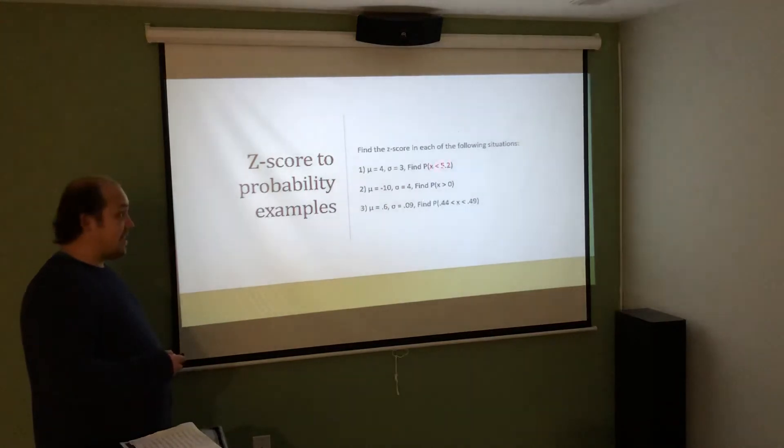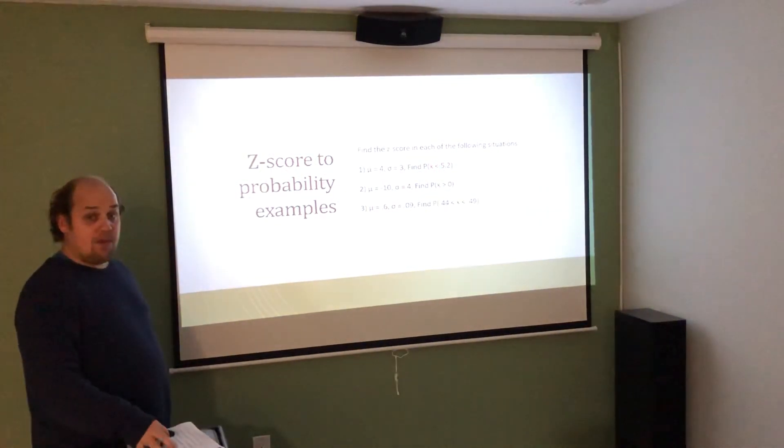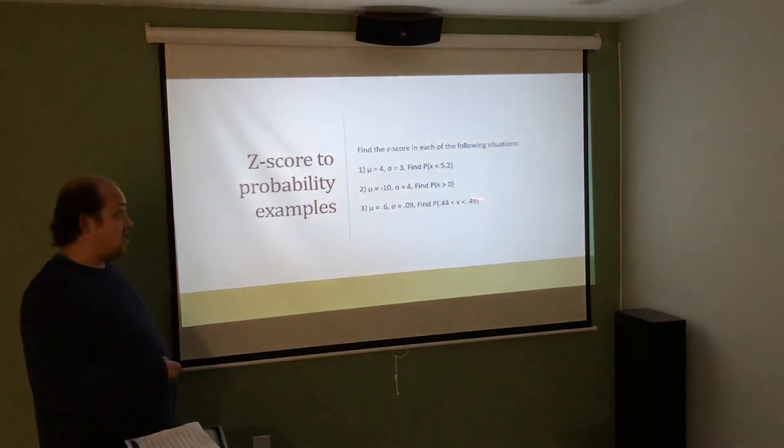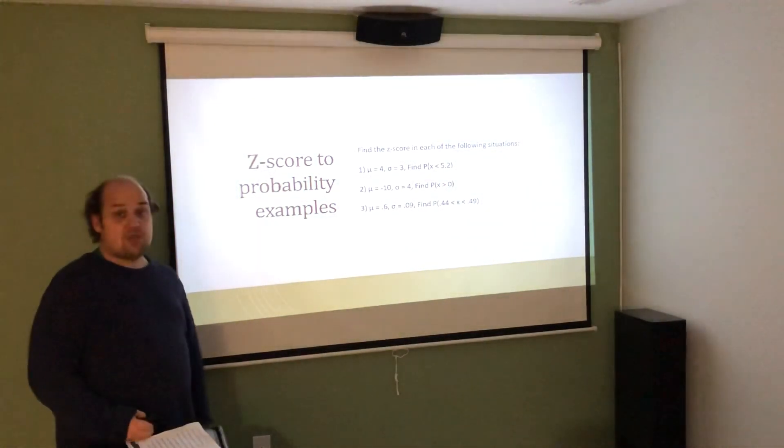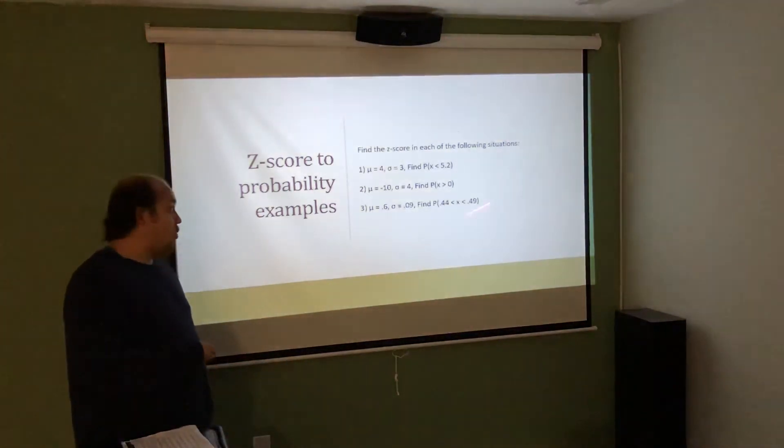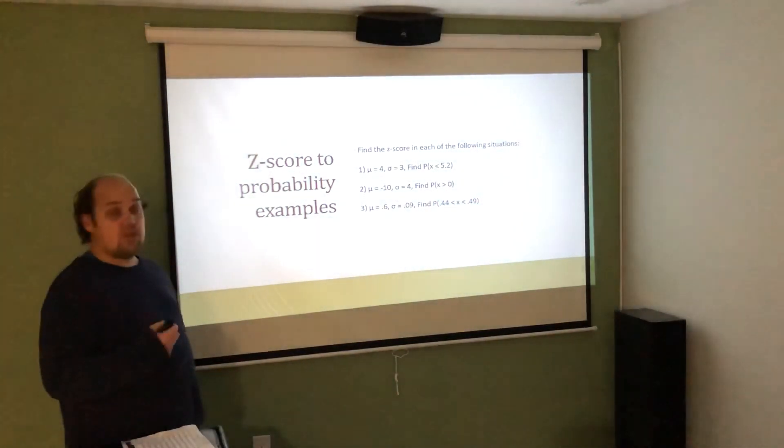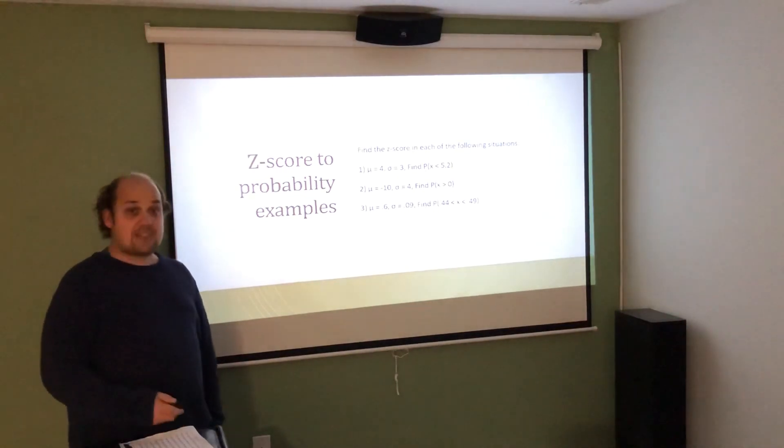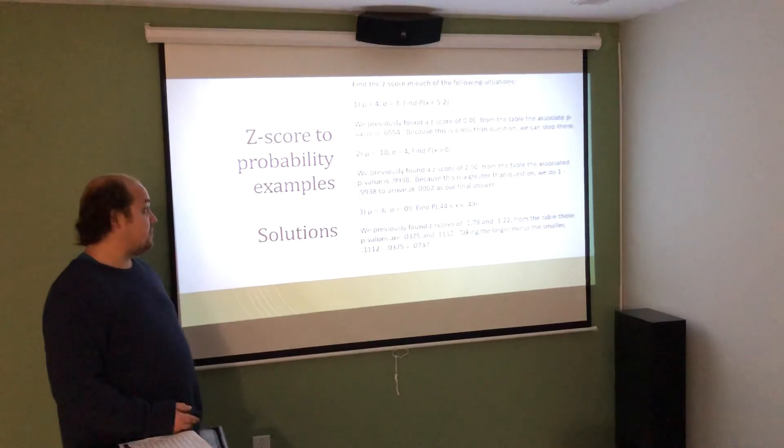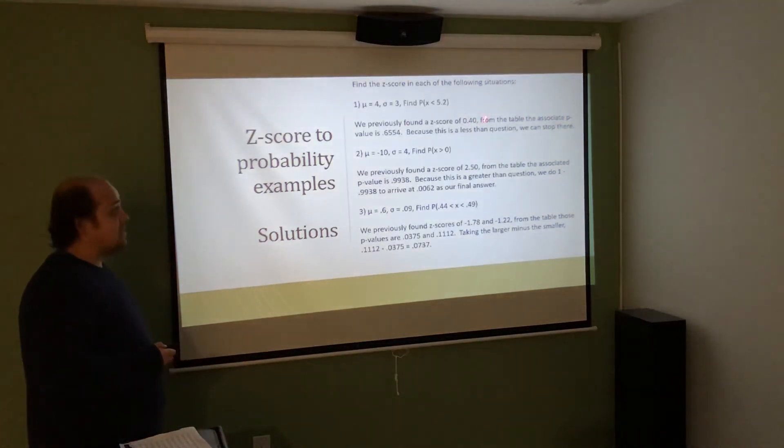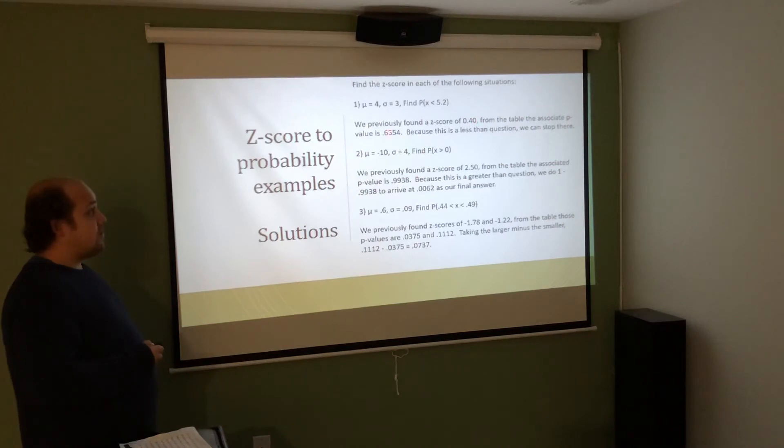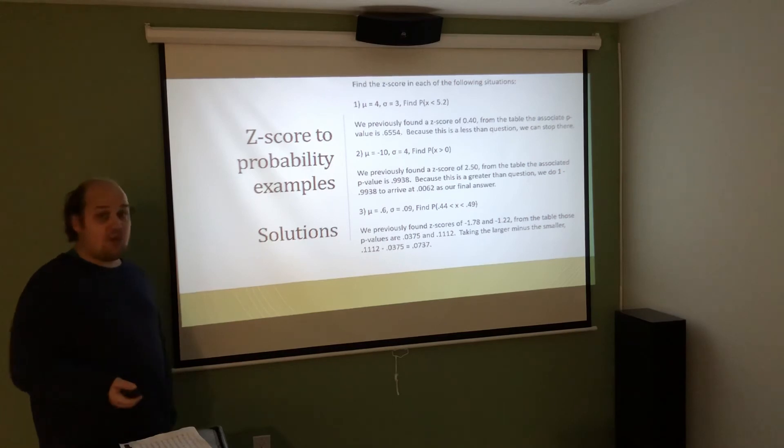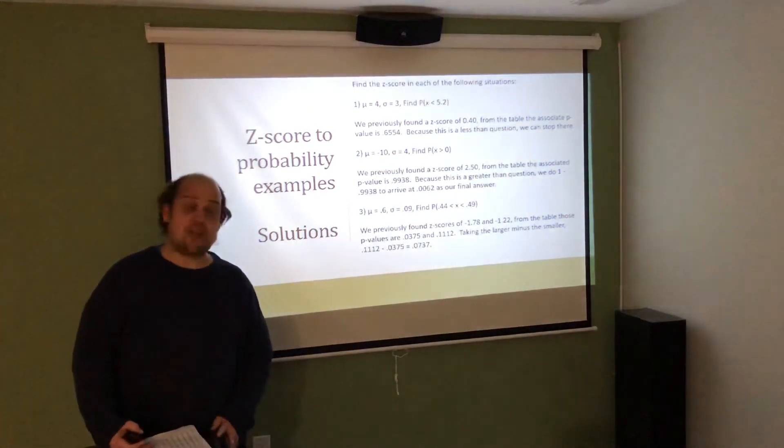So, for this less than question, I can use the exact table probability I find from the Z score I calculate. For this more than situation, I'm going to have to do 1 minus the probability I find. When it's a between question like this, I'm going to have to do the larger P value minus the smaller P value. So, for each of these three, we found the Z scores in the previous slide. We now just need to look up and find the associated probabilities. So, here we previously found the Z score of 0.40. The P value is 0.6554. Because it's a less than question, we don't have to go any further. We can just report that P value as the answer to the question.